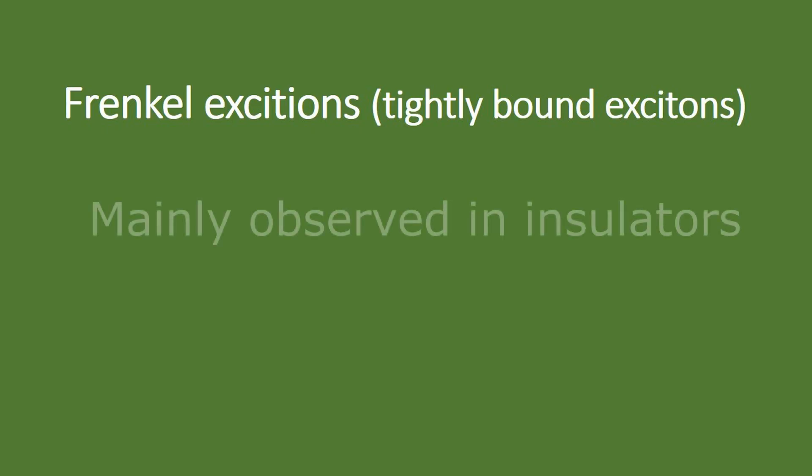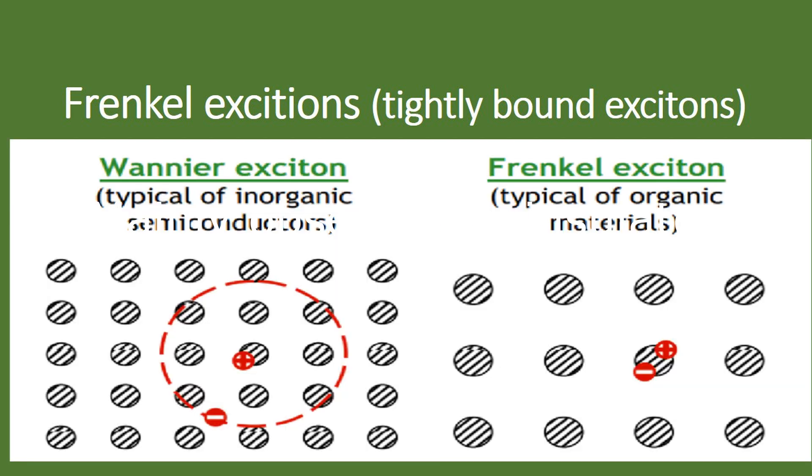Frenkel or bound excitons are mainly observed in insulators. Bound excitons by contrast have a much smaller radius and are comparable to the size of the unit cell. This makes them localized states which are tightly bound to specific atoms or molecules, that is why they are known as bound excitons.